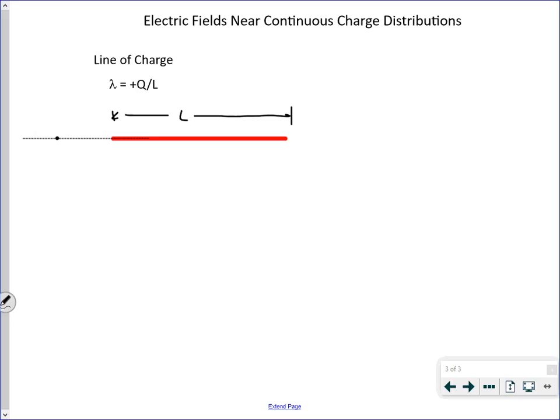We're saying that it's positively charged, and that rod, this line, has a linear charge density λ equals Q over L, charge per unit length by definition.